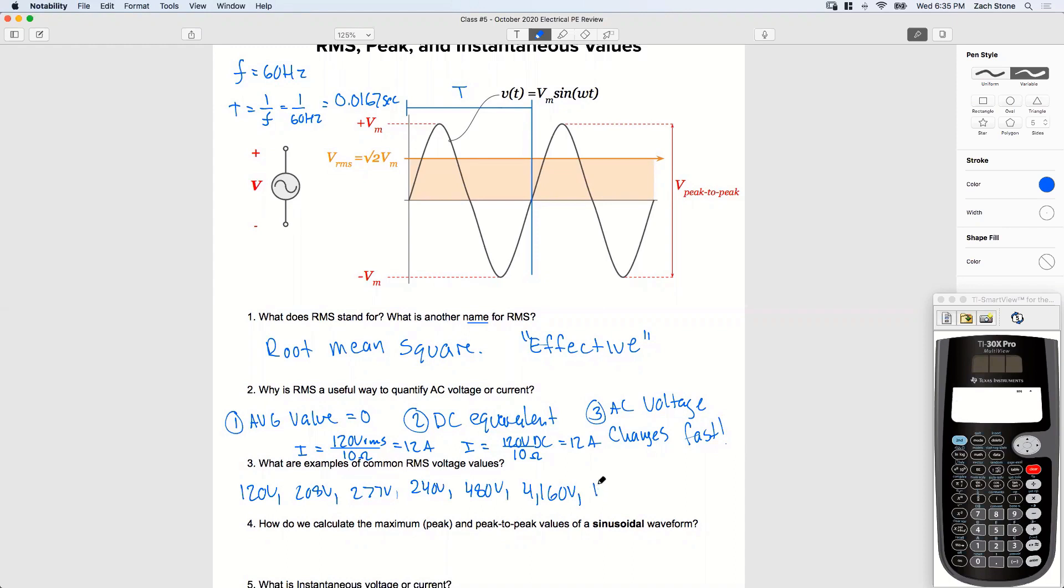4160, 13.8 KV, maybe 15 KV, 69 KV, 230 KV, 525 KV. Yep, exactly. So just about all the voltages we've been working with up to now have all been RMS values.